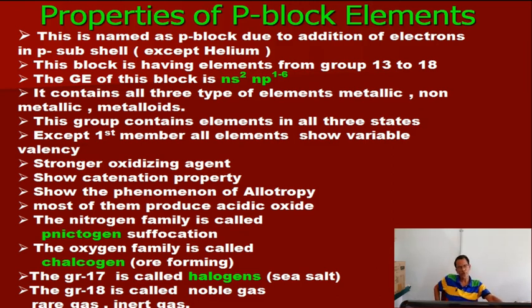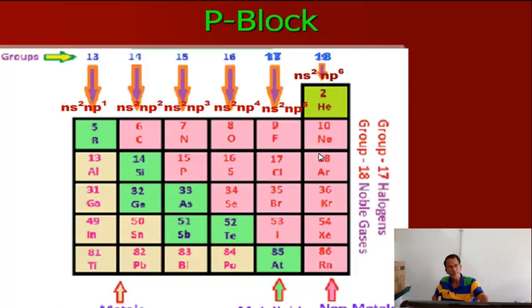Group 18 elements are called Noble Gases, also known as Rare Gases or Inert Gases: helium, neon, argon, krypton, xenon, and radon. Halogens (group 17): fluorine, chlorine, bromine, iodine, astatine. Chalcogens (group 16): oxygen, sulphur, selenium, tellurium, polonium. Pnictogens (group 15): nitrogen, phosphorus, arsenic, antimony, bismuth — named after suffocation (water).